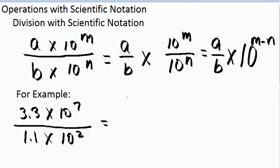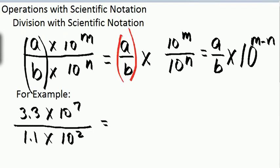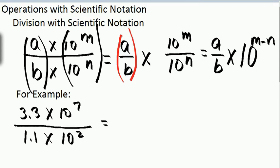Let's apply what we know about the division of powers to scientific notation. If I have, in general, a times 10 to the m divided by another scientific notation number, b times 10 to the n, I can group my factors: a divided by b times 10 to the m divided by 10 to the n. When I divide powers, I subtract their exponents, giving me a divided by b times 10 to the m minus n.